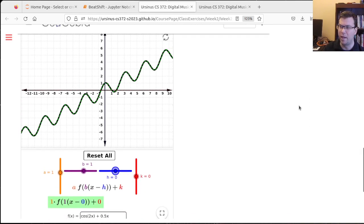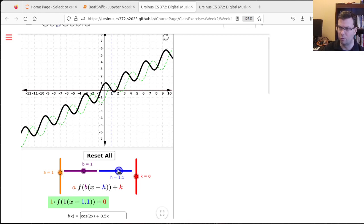And so for any function that we have, we can shift it horizontally as this GeoGebra demo shows here. We can shift it horizontally by subtracting the shift from the inside of the function, from the function argument there. So if I wanted to shift this over by one, I would subtract one from the inside. If I wanted to shift it over by four, I would subtract four from the inside.